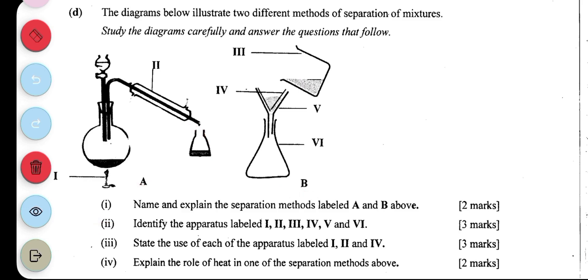Now we're asked to identify the labels. I is a Bunsen burner below the round bottom flask, II is a condenser, III is a beaker, IV is a filter paper, V is a funnel, then VI is a volumetric flask.